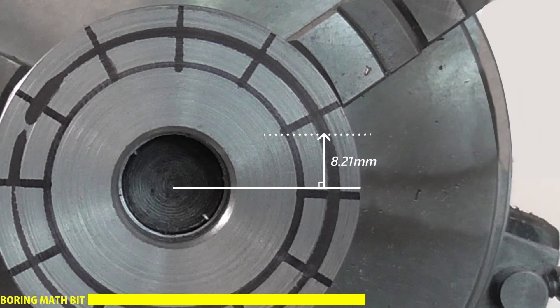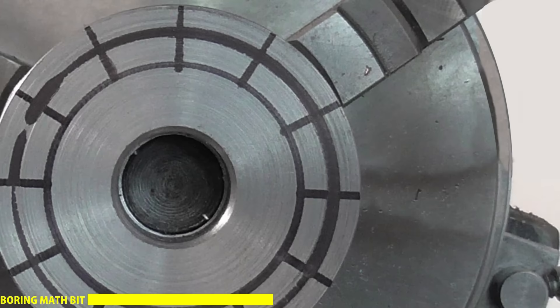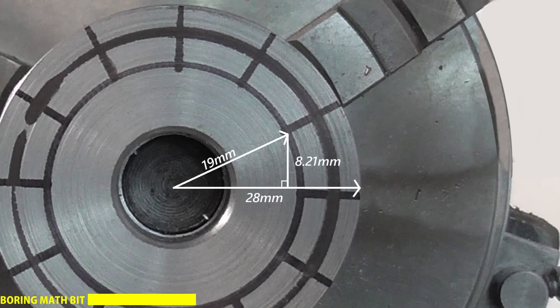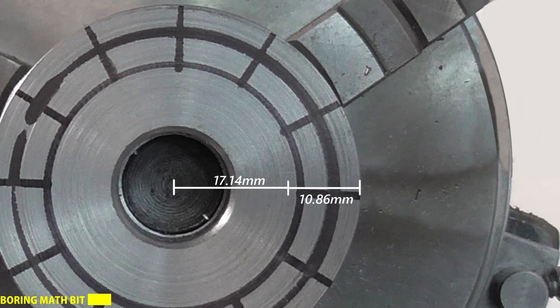Now I need to calculate how far to feed in the saw horizontally to reach the root circle. This can be done with Pythagoras theorem. The radius of the blank is 28 millimetres. The radius of the base circle is the radius of the pitch circle minus the dedendum, 19 millimetres. Now I can calculate this distance. And subtracting it from the radius of the blank gives the distance to feed in the saw, 10.86 millimetres.